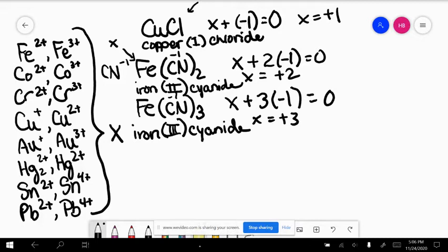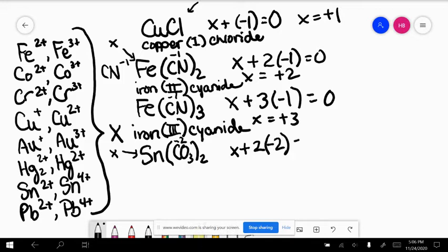How about this guy here? Well, we don't know what tin is, so that's going to be my x. So my variable charged metal is always assigned my x. I don't know what his charge is, but I do know that I am attached to two CO3s. If you look on your list of polyatomic ions, you'll find carbonate, and carbonate's charge is minus two. So in this case, x has a charge of plus four, and this one is tin four carbonate.